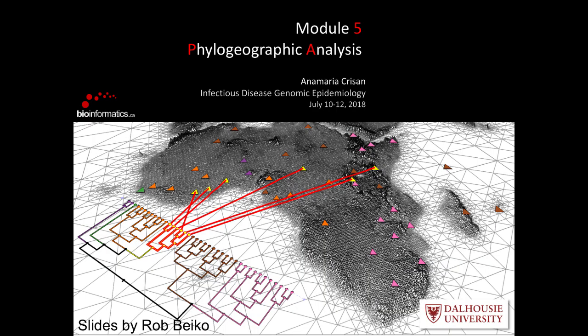Good afternoon, everyone. My name is Anna Maria Crissan, I usually just go by Anna, and I'm going to be talking to you this afternoon about phylogeographic analysis. The creator of this module content, who also taught it last year, is Rob Biko. Rob could not be here today, so I am taking over his material. Rob is the true expert on this subject, but there's a nice overlap between his work and mine, particularly in how we represent this kind of information. You'll see me again in the data visualization component of the CBW series.